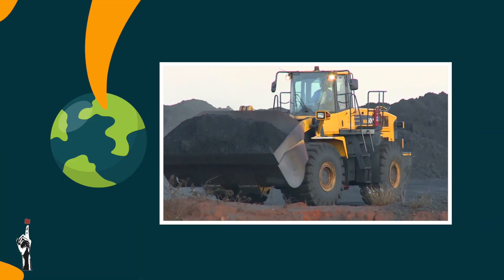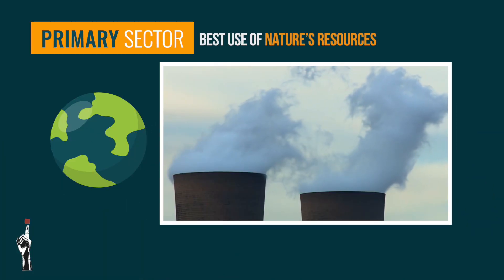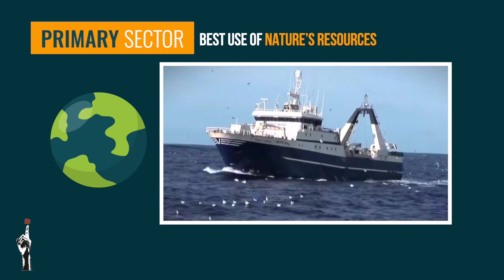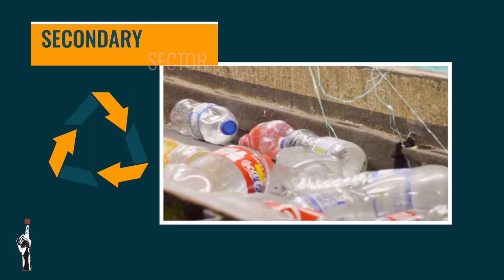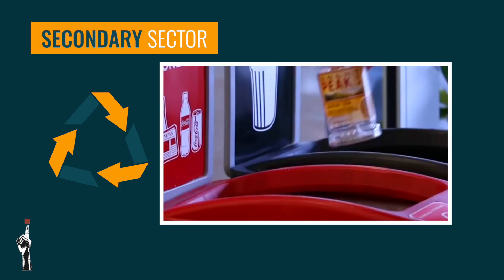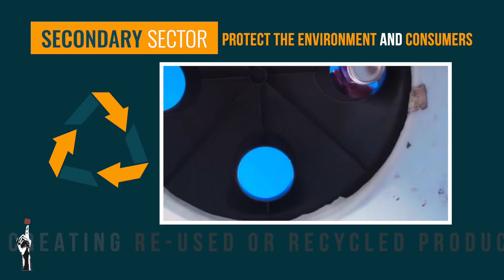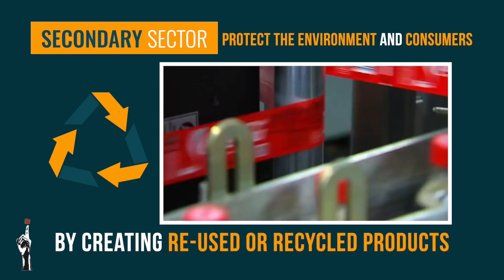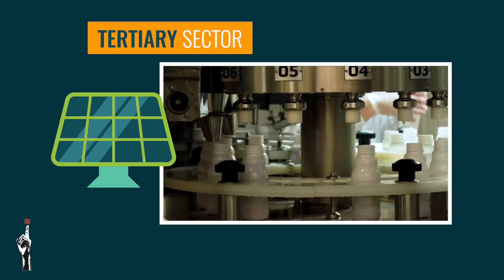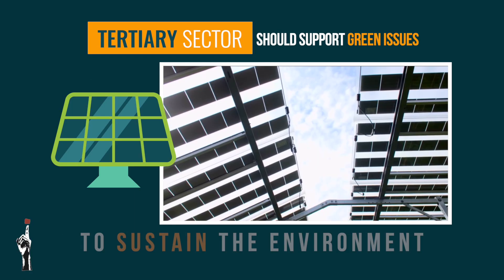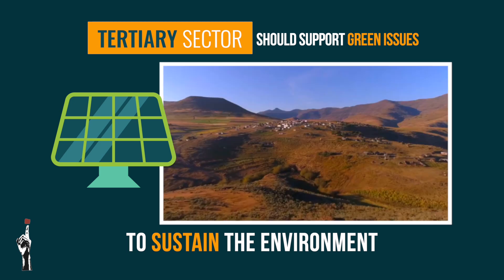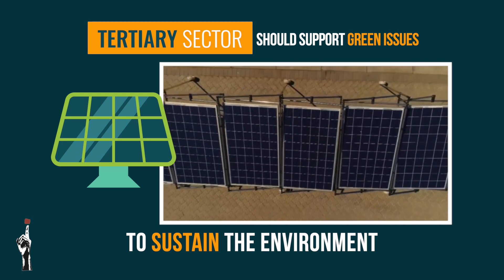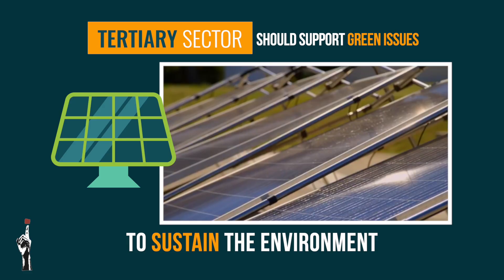Let's have a look at how the economic sectors can enact sustainable development. The primary sector businesses can make the best use of nature's resources, including water and land, as it reduces the sector's carbon footprint. The secondary sector businesses should also follow good practices to protect the environment and the consumers by creating products that can be reused or recycled. Businesses in the tertiary sector should support green issues to sustain the environment, for example by using less energy and electricity in the manufacturing process, and by using and supporting energy-efficient and environmentally friendly products and services.